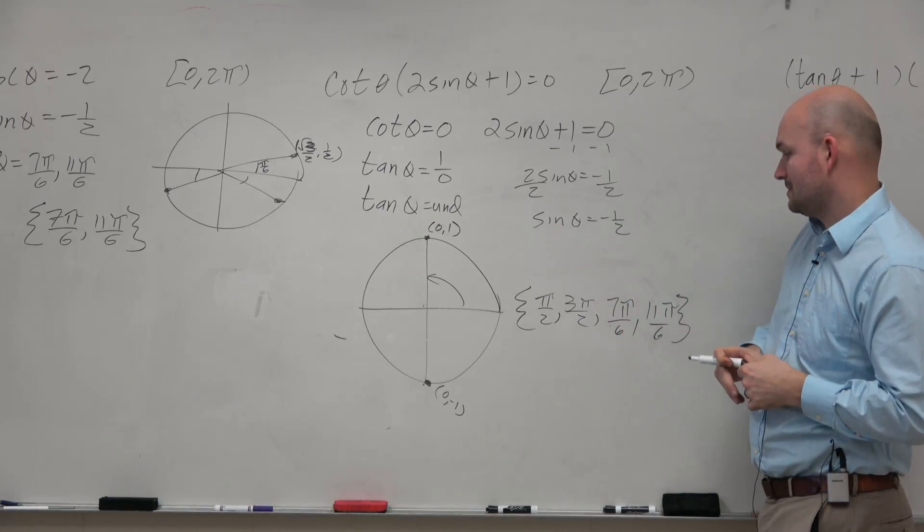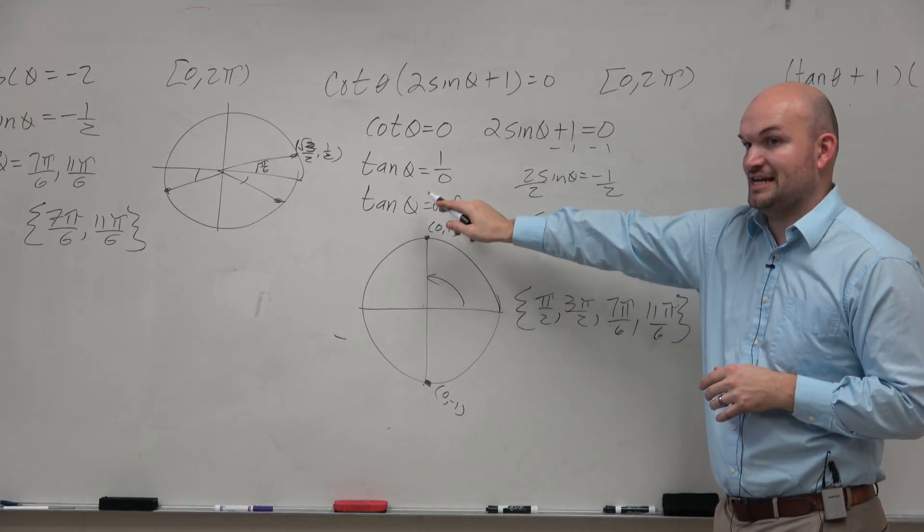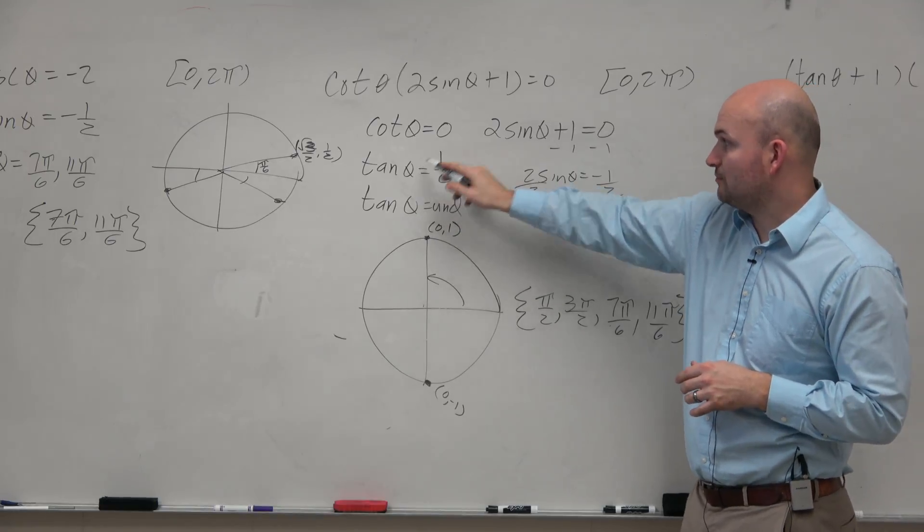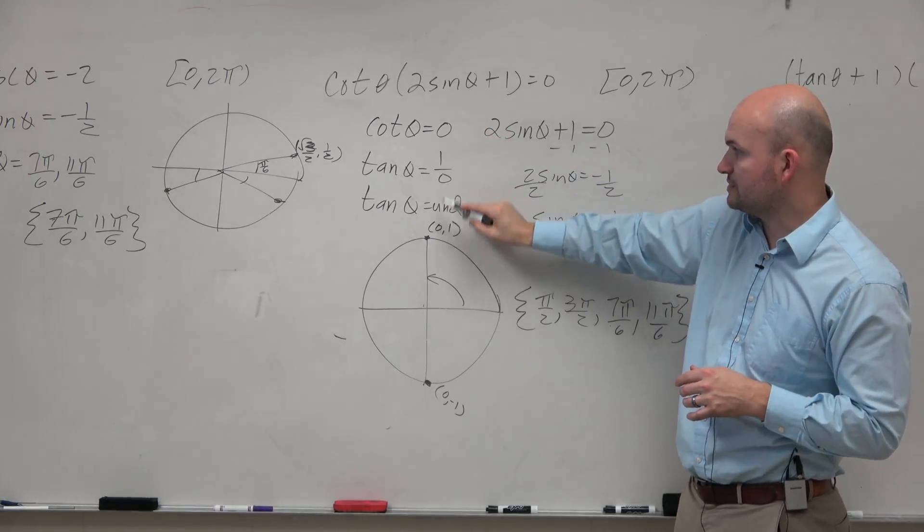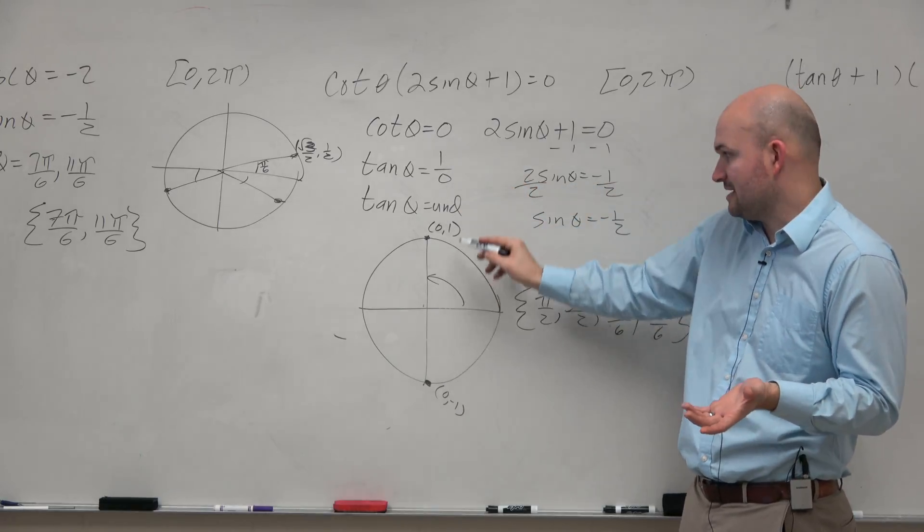And pi halves and 3 pi over 2 are 0, 1. That's for tangent. When tangent's undefined. Tangent when it's y over 0. Y over 0. 1 over 0. Or negative 1, it doesn't matter, it's undefined.